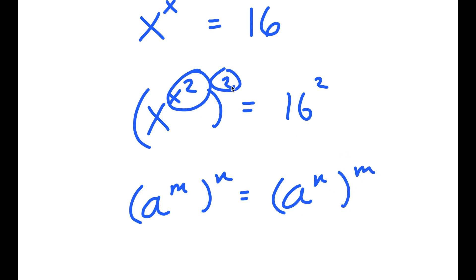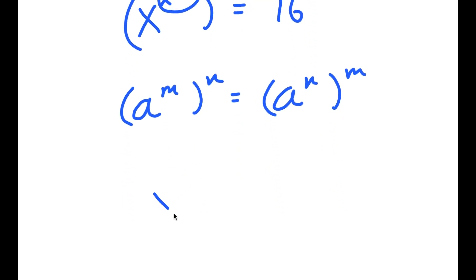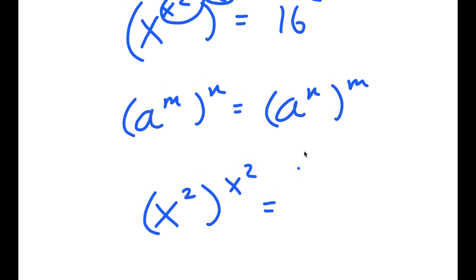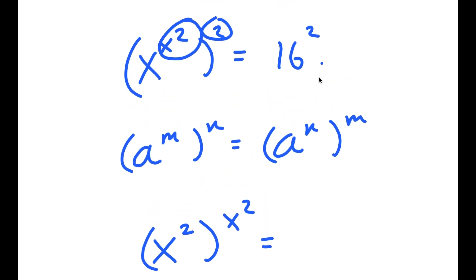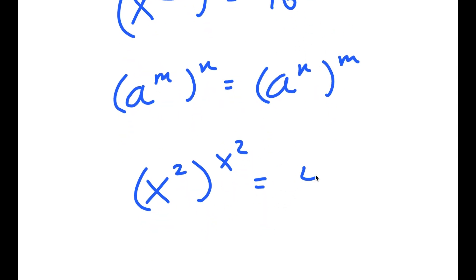So I can switch the places of x to the power of 2 and 2. Now I have x to the power of 2 to the power of x to the power of 2, is equal to 16 to the power of 2, which is the same thing as 4 squared to the power of 2.